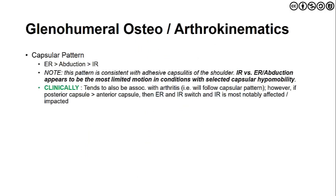Moving into osteo and arthrokinematics of the glenohumeral joint: there is a known capsular pattern where external rotation is greater than abduction, which is greater than internal rotation. This pattern is consistent with adhesive capsulitis, though internal rotation versus external rotation appears to be the most limited motion in conditions with selected capsular hypomobility. If the posterior capsule is tighter, we can see a fluctuation between external and internal rotation in terms of what is more notably impacted — this is why the posterior capsule is a common area of focused intervention.